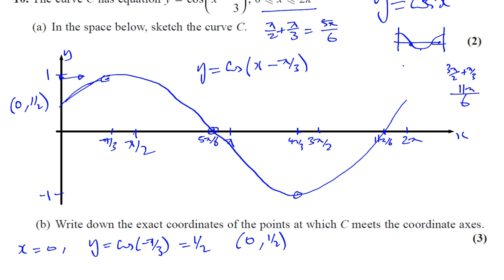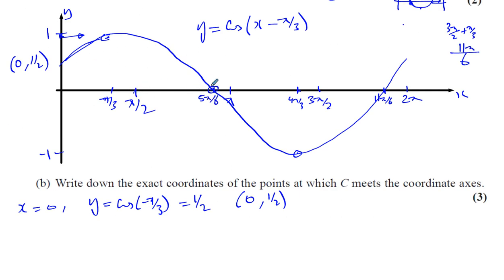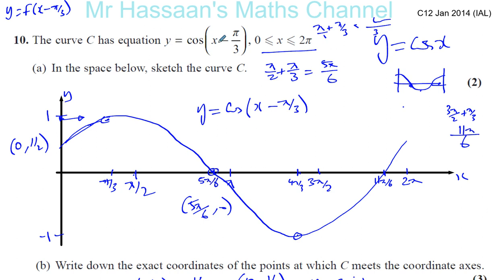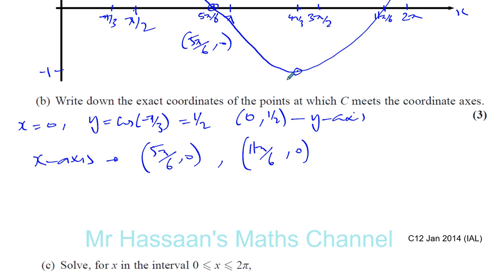Now we need where it crosses the x-axis. We've already found those: pi over 2 plus pi over 3 equals 5 pi over 6, so one crossing is (5 pi over 6, 0). The other is (11 pi over 6, 0). We could have found these by solving cosine(x minus pi over 3) = 0 directly — setting y = 0 and solving — but since we already sketched it and noted those values, we get the answers right away. So that's part B done.